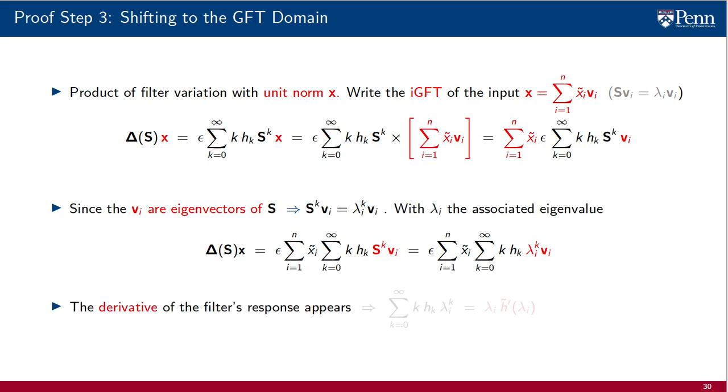The steps we have performed so far have led to a remarkable expression, because the derivative of the filter's frequency response has appeared. Indeed, if we isolate the scalar terms that appear multiplying λᵢ in the innermost summation of our last expression, we can invoke fact 2 in the proof preliminaries to claim that this is the product of λᵢ with the derivative of the filter's response h̃' of λᵢ. The recognition that this factor appears is the most important step in the proof. All of the other pieces of the proof are either leading towards this recognition or building from this recognition.